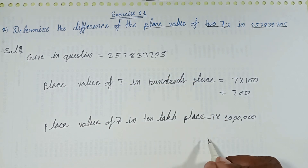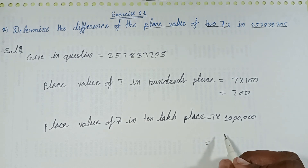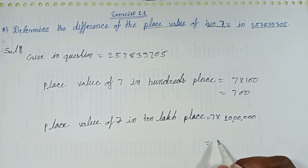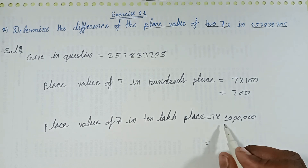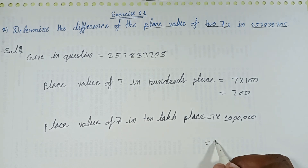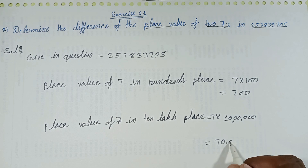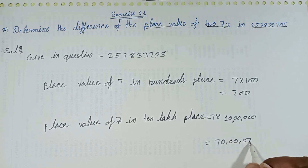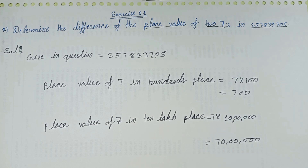7 multiplied with 10 lakh equals 70 lakh. Now find the difference between these two place values.